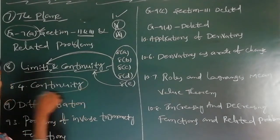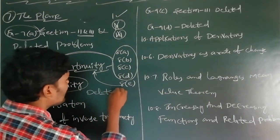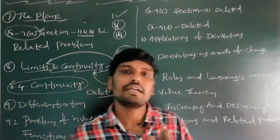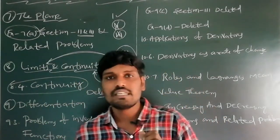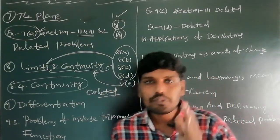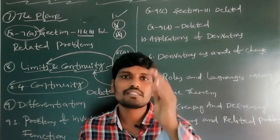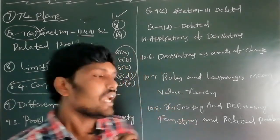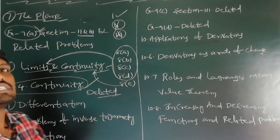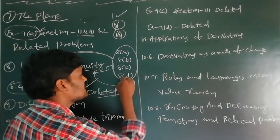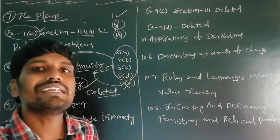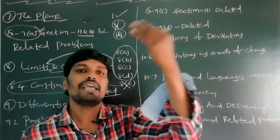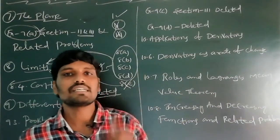In Limits and Continuity, the continuity part is totally deleted. That means the last exercise, which belongs to continuity, is deleted from the IP examination.